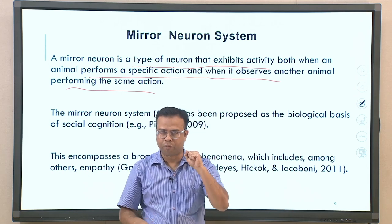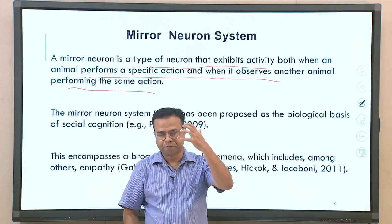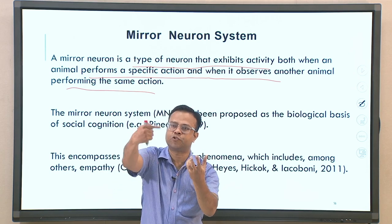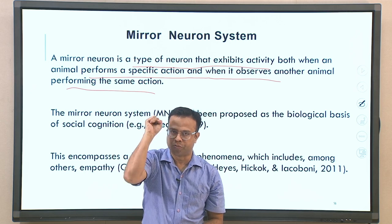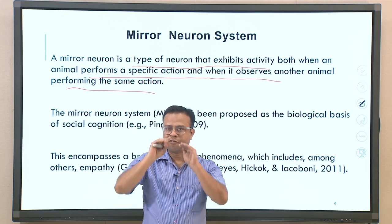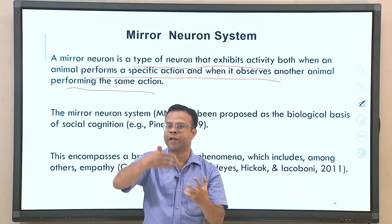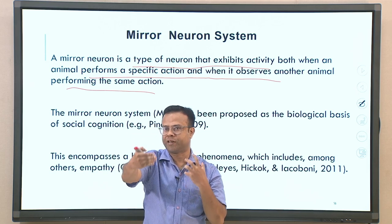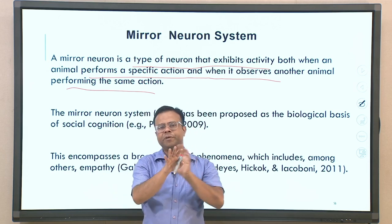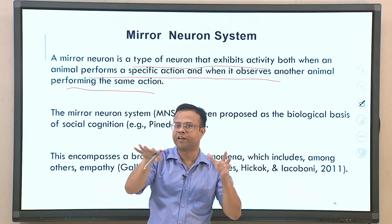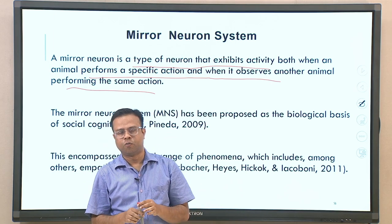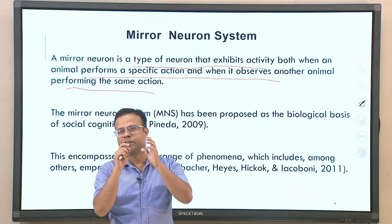When certain actions are performed — like picking something up — certain neurons fire and become active. In the case of mirror neurons, the same neuron becomes active when you see someone else doing the same thing. When you observe someone else picking up an object, mirror neurons become active just from looking at the other person doing it — as if you yourself are performing the action. This mirror neuron system has been proposed as the biological basis of social behavior, including many social cognitions including empathy.